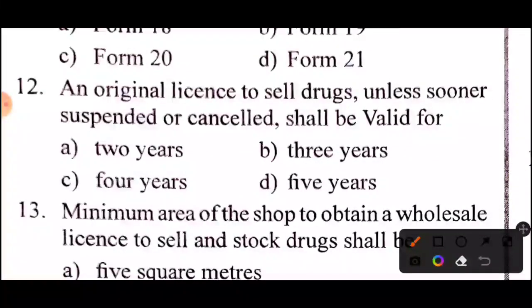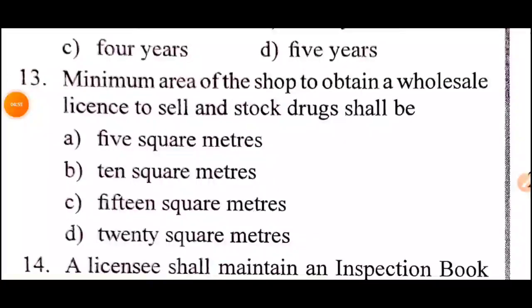Question 12: An original license to sell drugs, unless sooner suspended or cancelled, shall be valid for how long? The answer is Option D: 5 years.